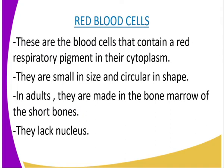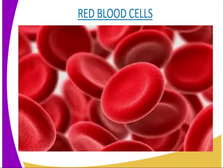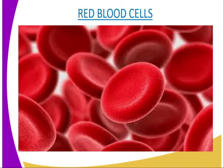Their large number suits them to their function of transporting oxygen and carbon dioxide. The red blood cells are made in the bone marrow of the short bones such as the sternum, the ribs, and also the vertebra. In the embryo, they are made in the liver and the spleen. Mature red blood cells have no nucleus but have a sanguine center that makes the cells resemble a biconcave disc, as you can see from our diagram. The absence of the nucleus creates room for more hemoglobin to be packed in the cell to enable it to carry more oxygen. They also lack most of the organelles, and this property increases room for packaging of more hemoglobin.